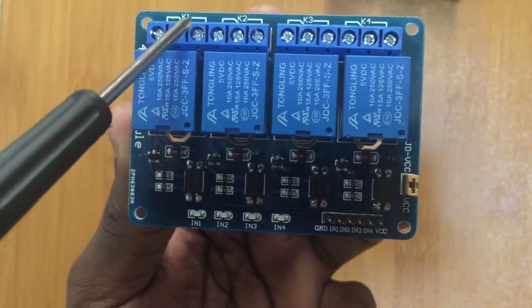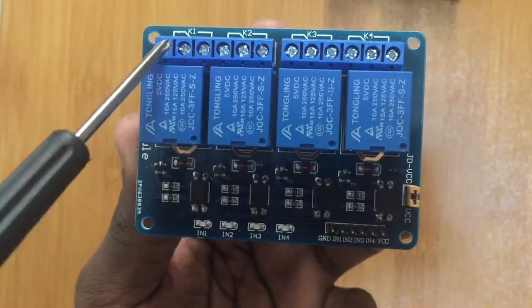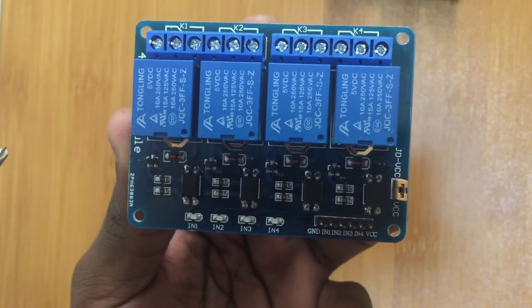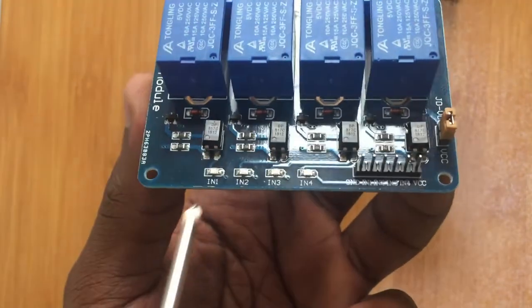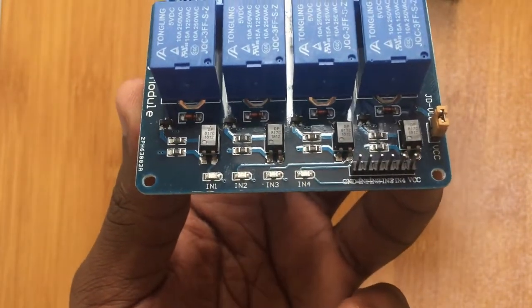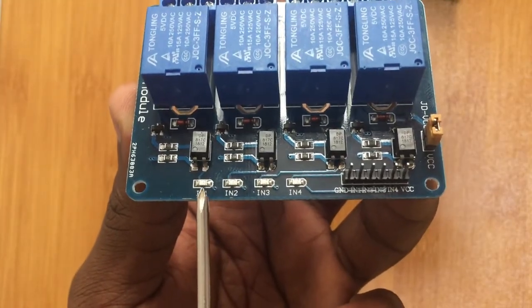I'm going to show you how you can determine which one is normally closed and which one is normally open using a multimeter. Then here we have these four LEDs which light to show if the relay is on or off.